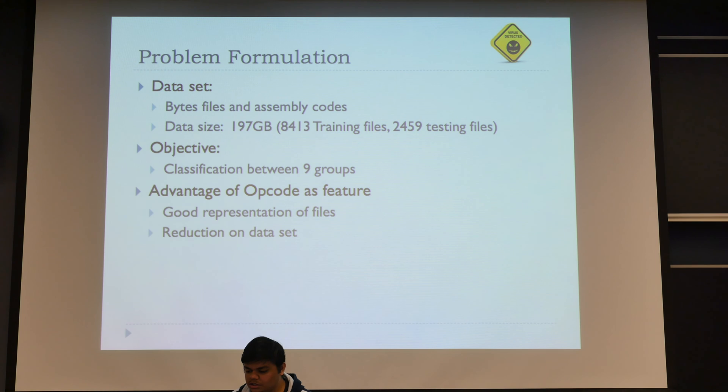So this is what we did. We had around 200 GB of infested files—basically byte files and assembly level code files. We tried to classify them between nine different malware groups. The technique we used was to use just the opcodes as features and not the entire file. The advantage was that the dataset reduced a lot by just using the opcodes. We reduced the dataset from around 200 GB to about 600 MB, which made it quite easy for us to do classification.